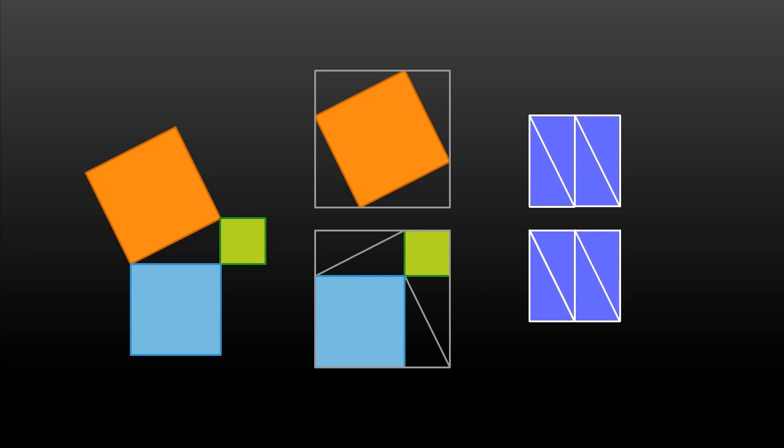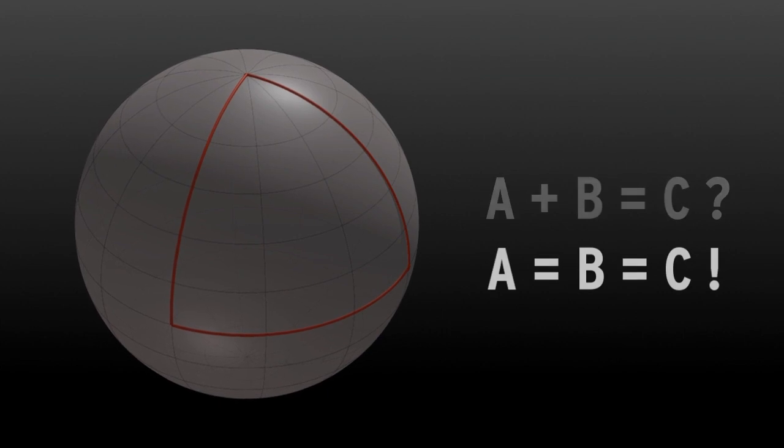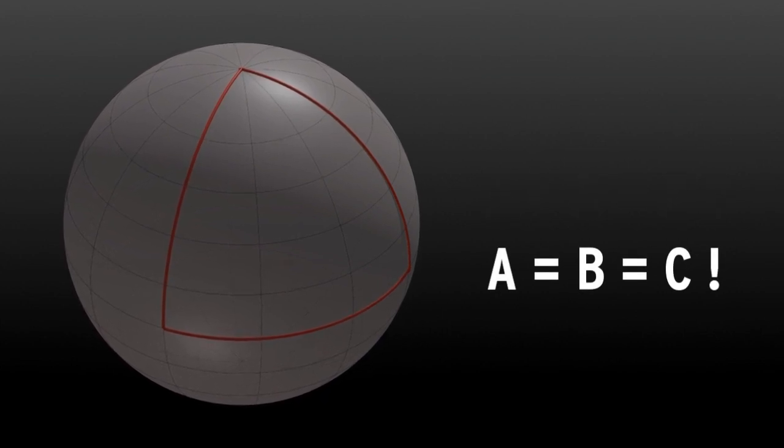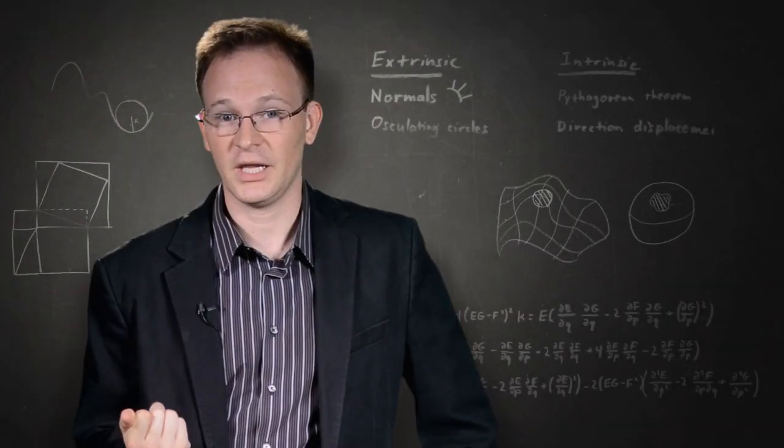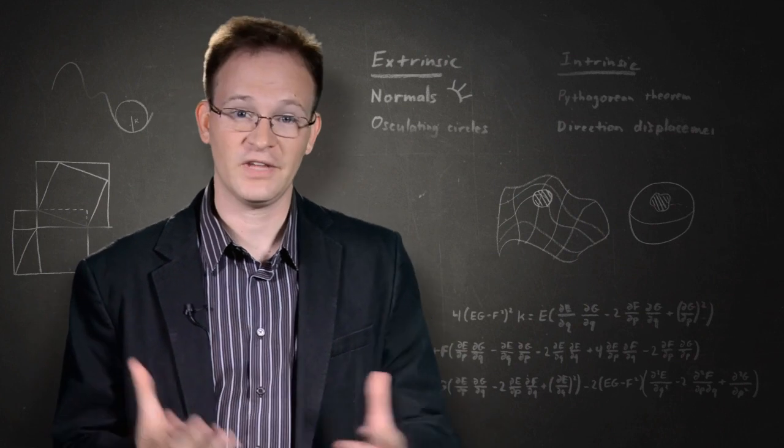But as we saw earlier, this is certainly not true on a sphere. Remember our triangle with three right angles? Which side is A, which is B, and which is C? The Pythagorean theorem just doesn't hold here. The way it must be modified is a clue to the surface land polygons. It's a technique for discovering the shape of their world from inside it.